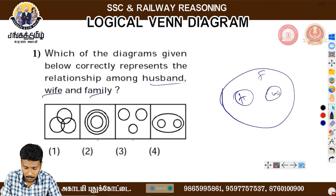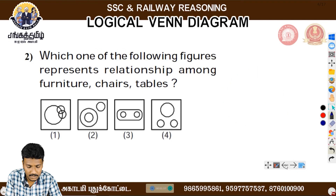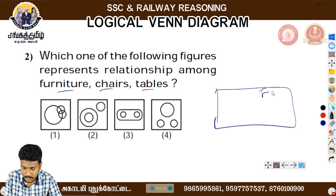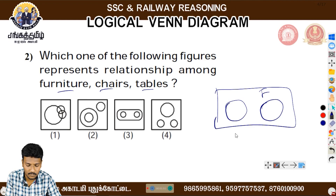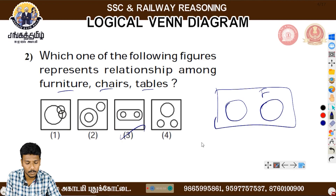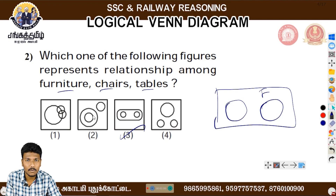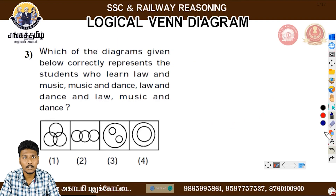The fourth option is the first type. The second option is the furniture, chair, and table. The second option is also the third option. Now we will talk about the third option.